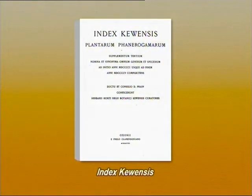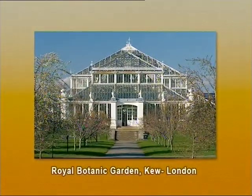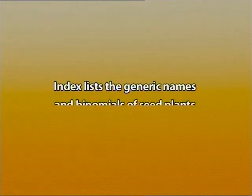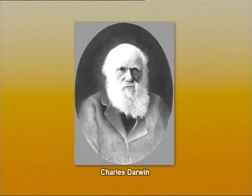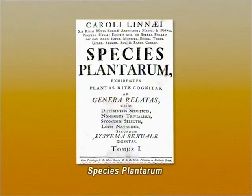Some of the major indexes produced are as follows. The first and most famous is Index Kewensis, or IK for short. Index Kewensis is by far the most important and comprehensive reference tool, and it has been compiled at Royal Botanical Gardens, Kew. It lists the generic names and binomials of seed plants in alphabetical order. In fact, it was Charles Darwin who provided funds for the initial indexing effort, and it attempted to capture all the names back to Species Plantarum of Linnaeus, that is, 1753.